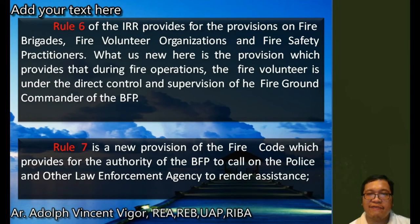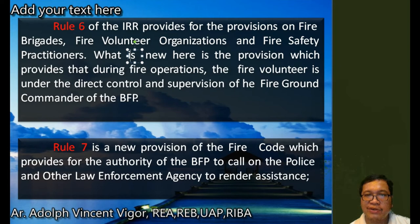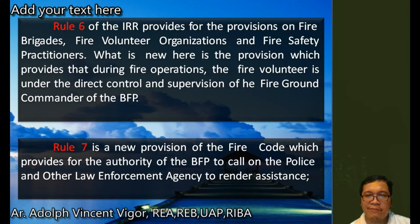Rule 6 of the IRR provides for the permission of fire brigades, fire volunteer organizations, and fire safety practitioners. What is new here is the provision that during fire operations, the fire volunteer is under the direct control and supervision of the fire ground commander of the Bureau of Fire Protection. Rule 7 is a new provision of the fire code providing for the authority of the BFP to call on police and other law enforcement agencies to render assistance.